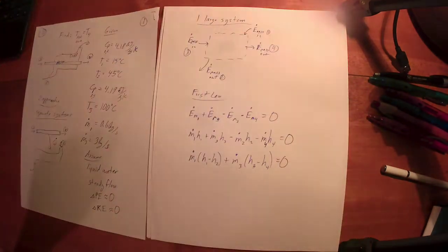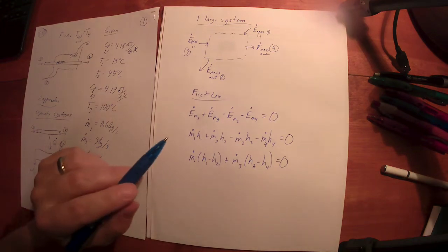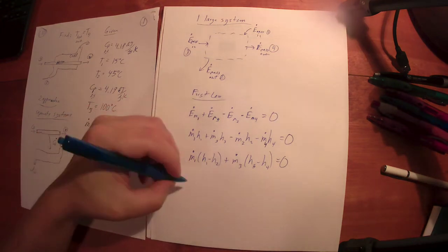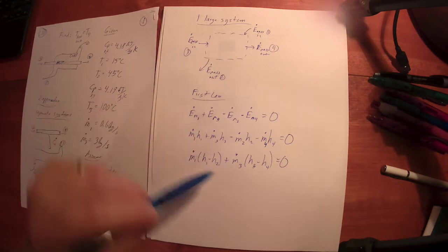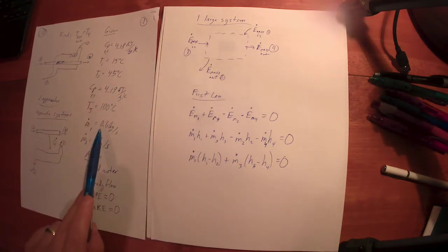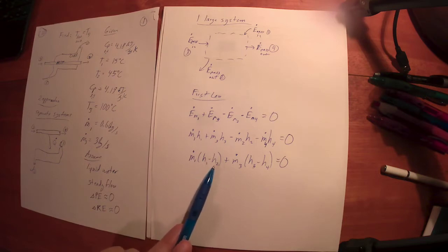Okay, got my timer going. So let's pick up there. I know the mass flow rates — we've established that. I know I've got an enthalpy change. So how do we find enthalpy?